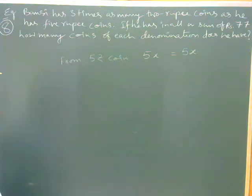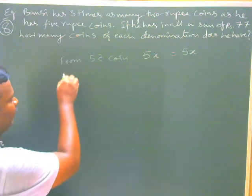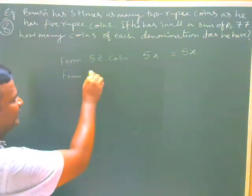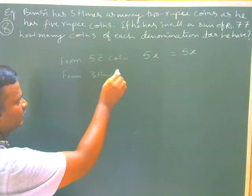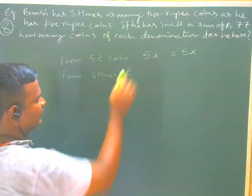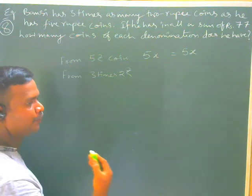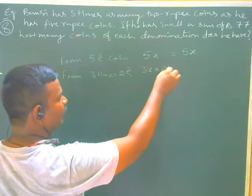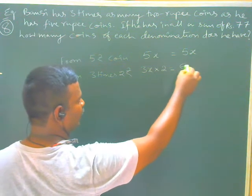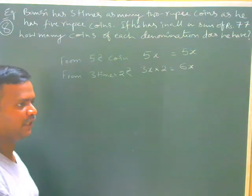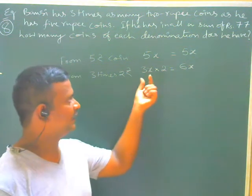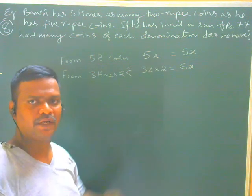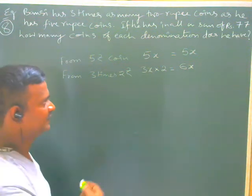Now, how many 2-rupee coins are there? There are 3 times the number of 5-rupee coins, so 3 times X coins. That means 3X coins of 2-rupee denomination, giving a value of 2 into 3X, which equals 6X. So the total value from 2-rupee coins is 6X.